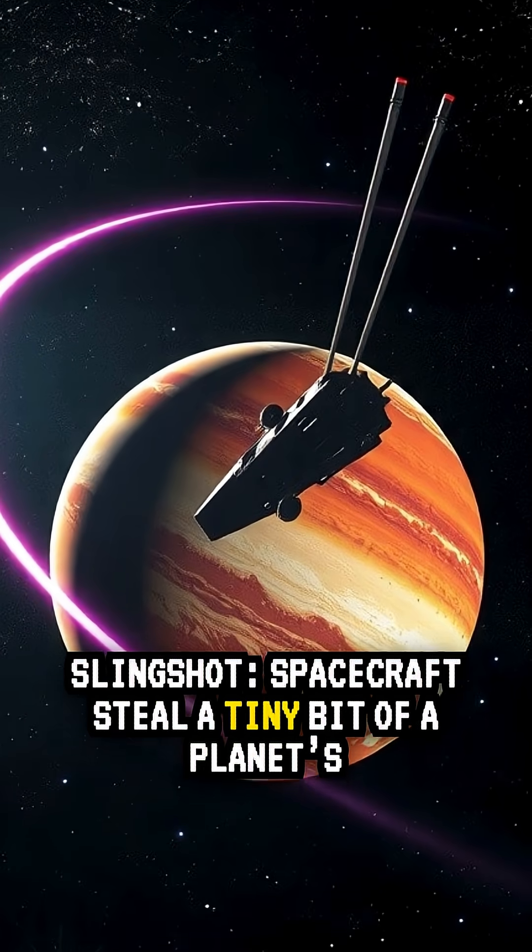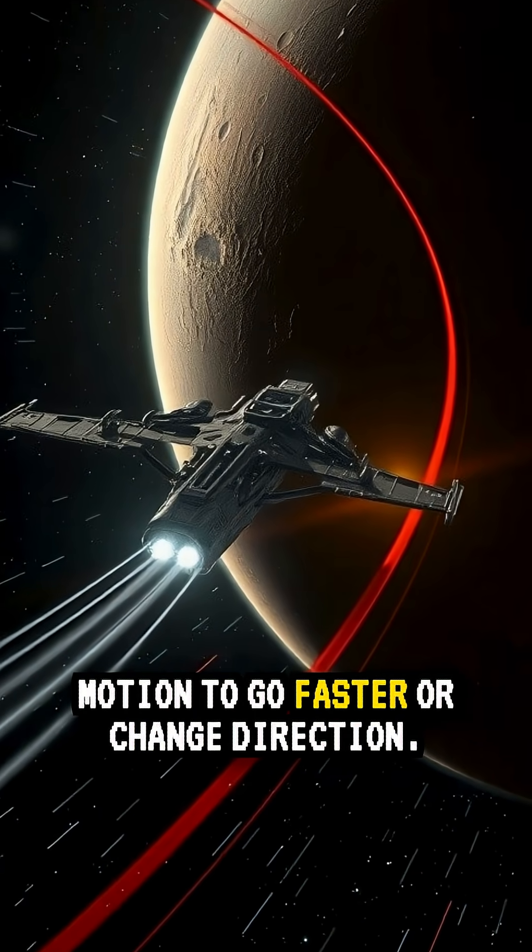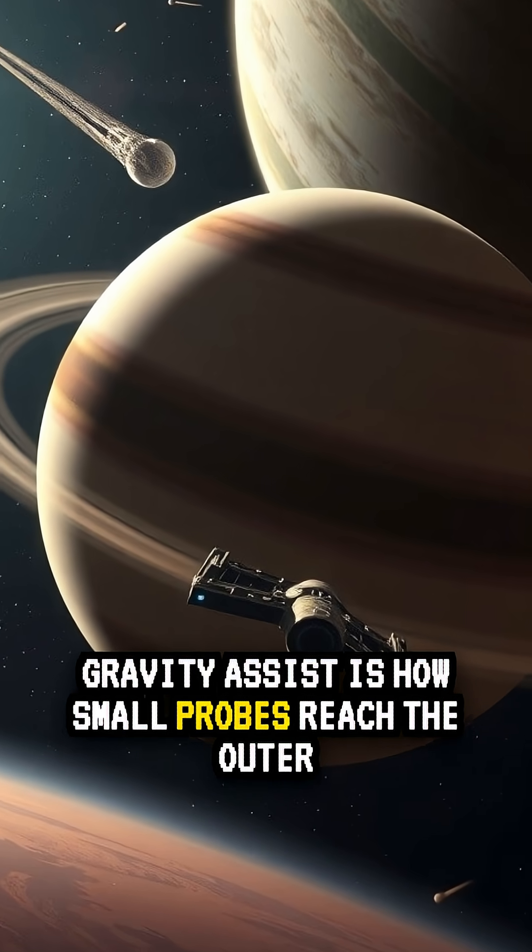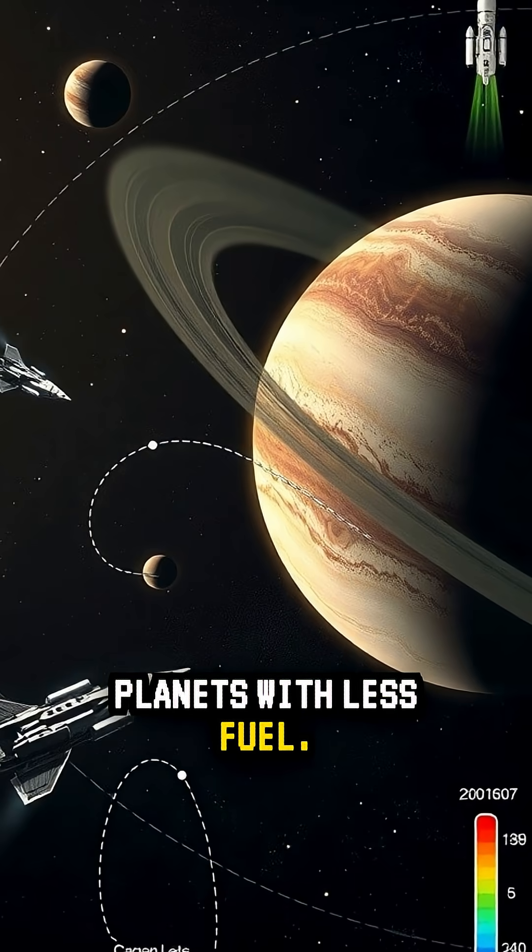Slingshot. Spacecraft steal a tiny bit of a planet's motion to go faster or change direction. That gravity assist is how small probes reach the outer planets with less fuel.